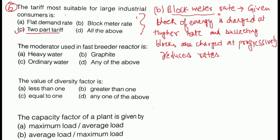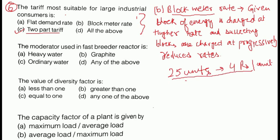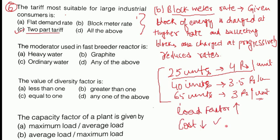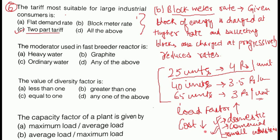Next method is the block meter rate method. In this method, the starting units are charged at a higher rate and then subsequent units are charged at progressively lower rates. For example, the first 25 units at 4 rupees per unit, next 40 units at 3.5 rupees per unit, and next 65 units at 3 rupees per unit. This method encourages the consumer to consume more units, which increases the plant's load factor and reduces generation cost. This method is used for domestic, commercial, and small industries.